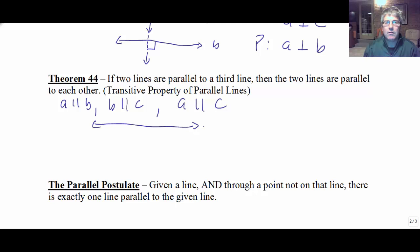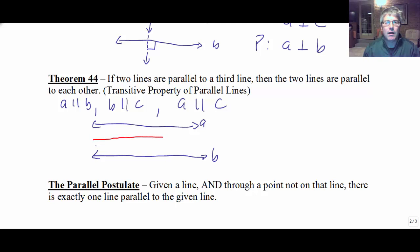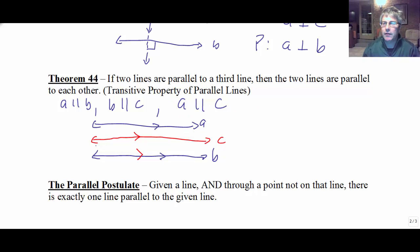So A is parallel to B, and B is parallel to C. A and B are parallel, B and C are parallel. Therefore, A must be parallel to C by the transitive property of parallel lines.